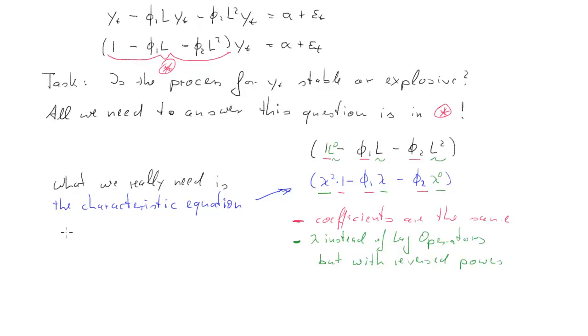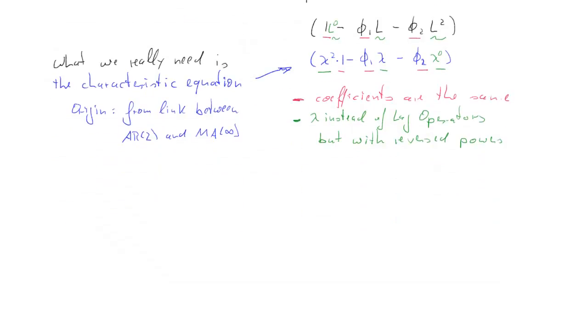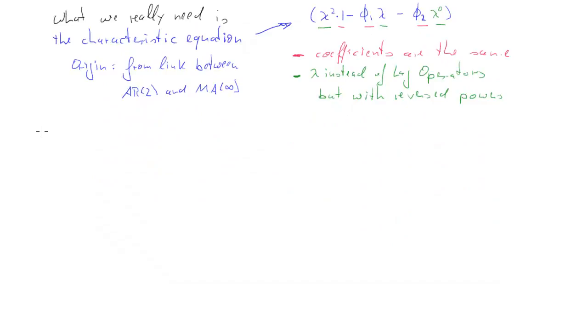So this is what's called the characteristic polynomial. We will turn it into an equation very soon. So where does this come from? Really it comes from the link between here an AR(2) model and an MA infinity model. Moving average of order infinity. If you understand the link between these, you will recognize this equation. But for the time being, just accept it as it is and use this rule.